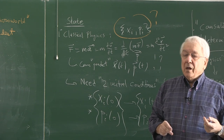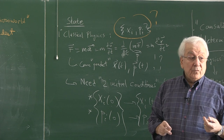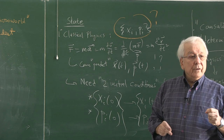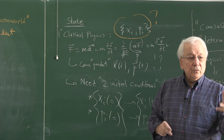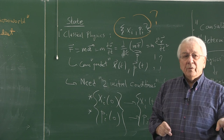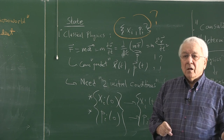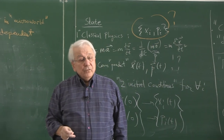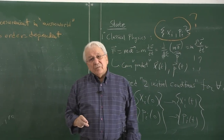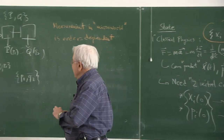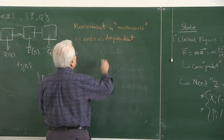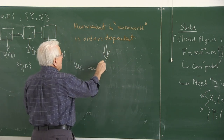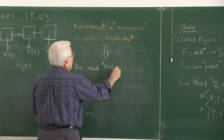Linear operators are fundamentally different from ordinary C numbers. They depend on the order: if you multiply them in one order, you get one result; if you multiply them in another order, you get another result. These are the things we need in quantum theory to represent dynamical variables — we need order-dependent mathematical entities.